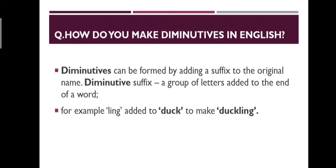How do you make diminutives in English? Diminutive suffixes can be formed by adding a suffix to the original name. A diminutive suffix is a group of letters added to the end of the word. For example, '-ling' added to 'duck' makes the new word 'duckling'.